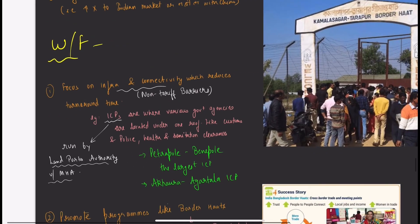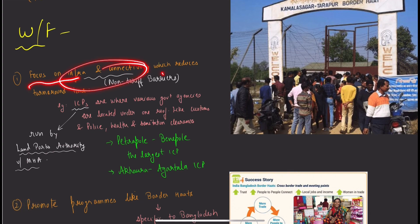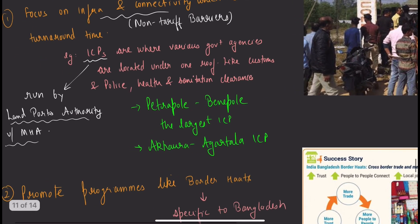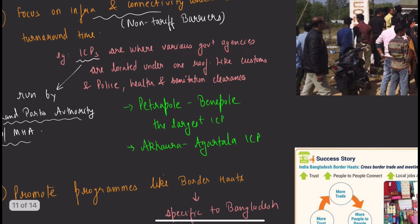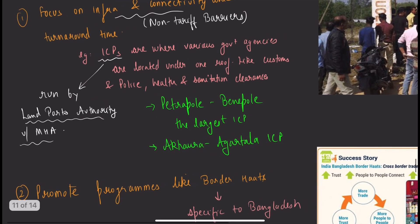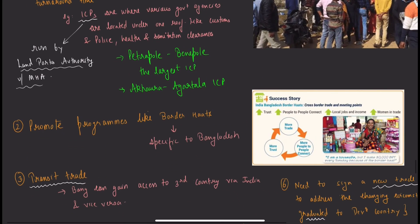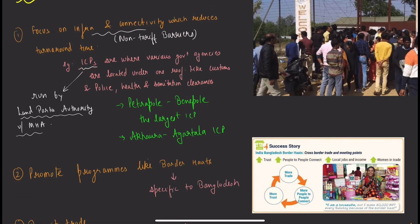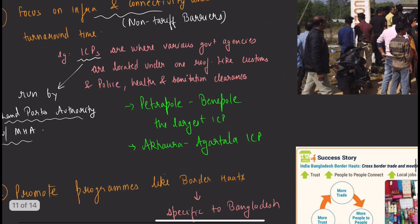Border haats like Kamalasagar and Tarapur can be established. Way forward for economic relations: focus on infrastructure and connectivity which reduces turnaround time. ICPs are Integrated Checkpoints where various government agencies—customs, police, health, sanitation clearances—are located under one roof. This improves logistics efficiency.